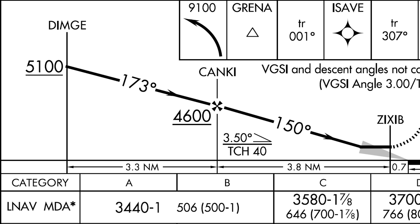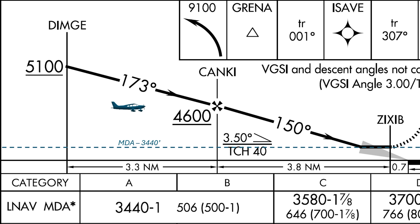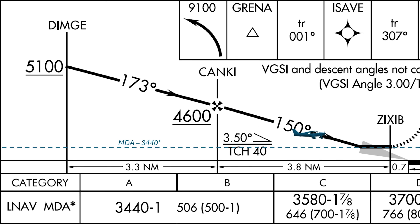On this approach, the MDA for our aircraft is going to be 3,440. We arrive at the final approach fix CANKI, begin a constant rate descent, arrive at the MDA, and level off. If we don't see the runway, we proceed to the missed approach point ZIGZIB and go missed.